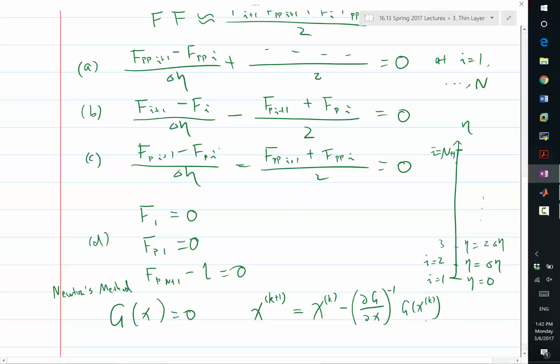So x_k plus 1 can be thought of as the 0 point, the solution to the linear approximation to the function g. Write down a linear approximation to function g, and we compute the solution, that's x_k plus 1.